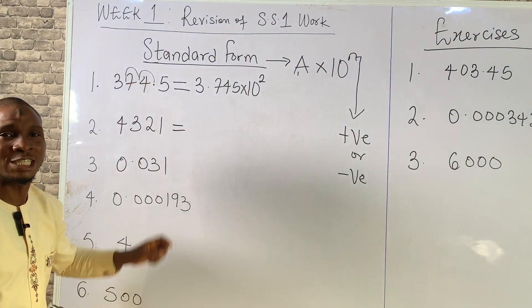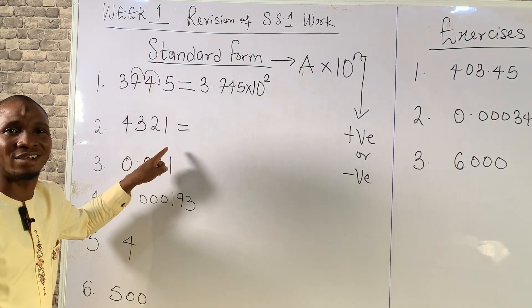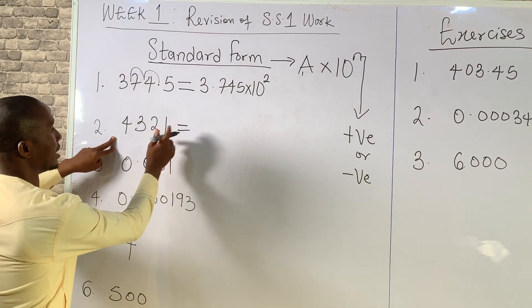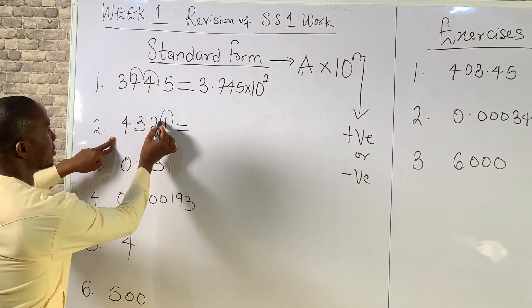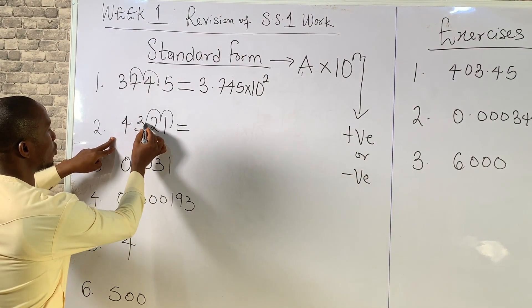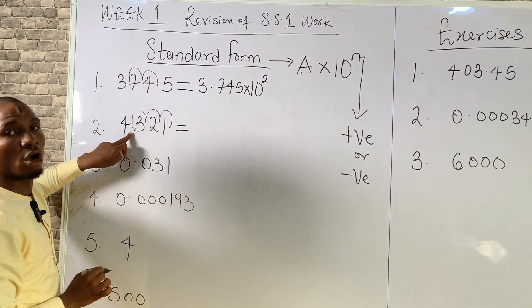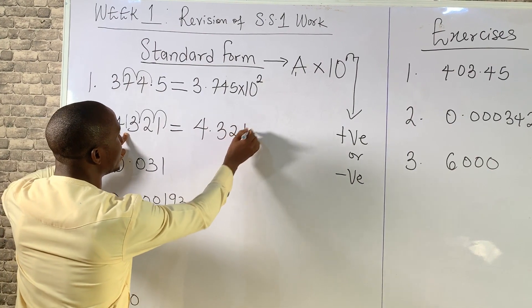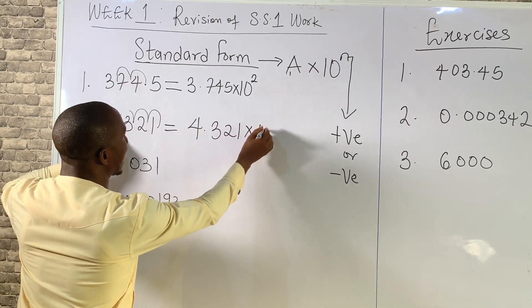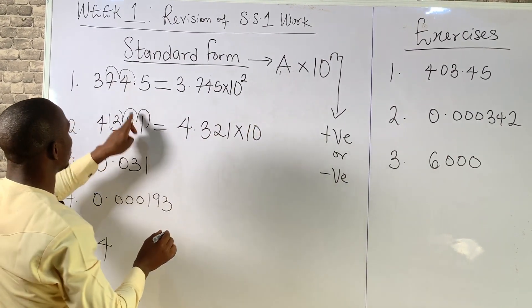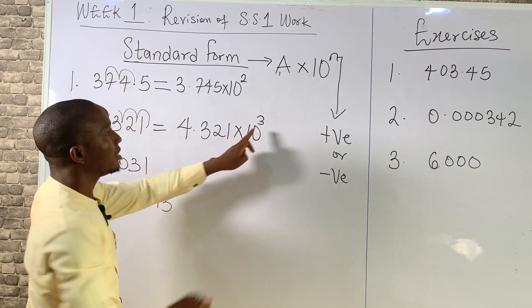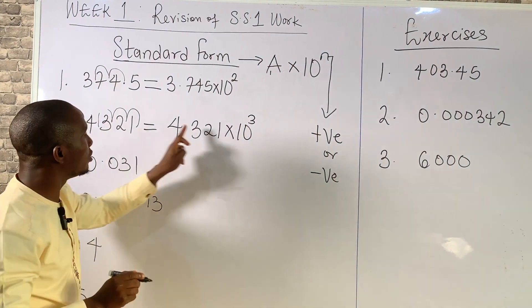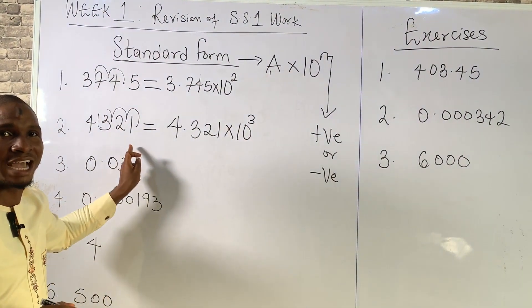Example 2: We want to express 4,321 in standard form. The decimal point is at the end, so we count 3 places to the left. The answer is 4.321 times 10 raised to power 3 — positive, because we moved the decimal point towards the left-hand side.